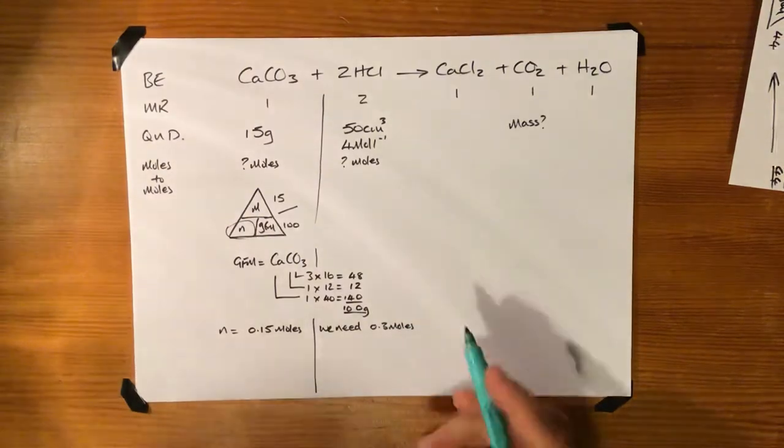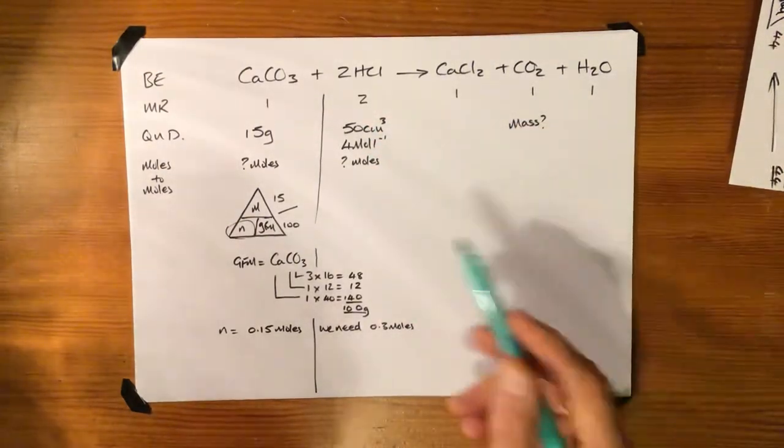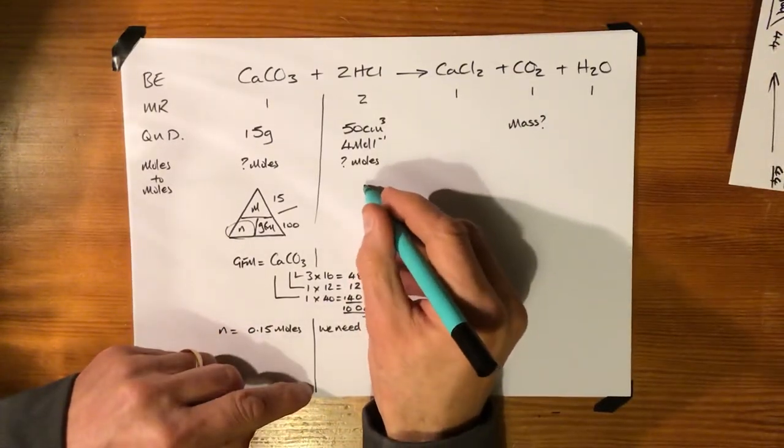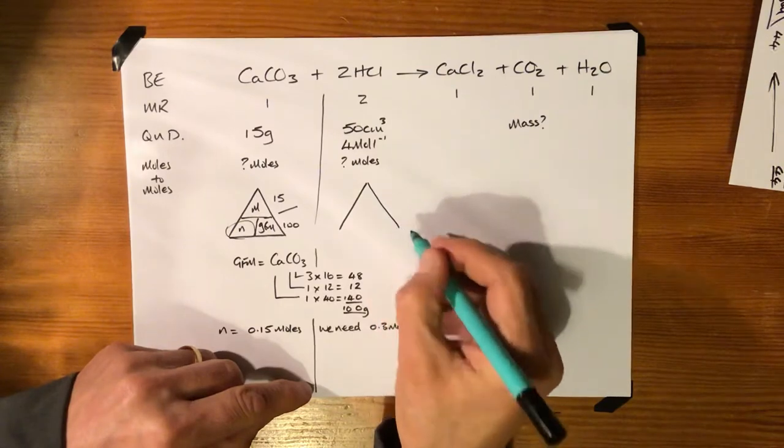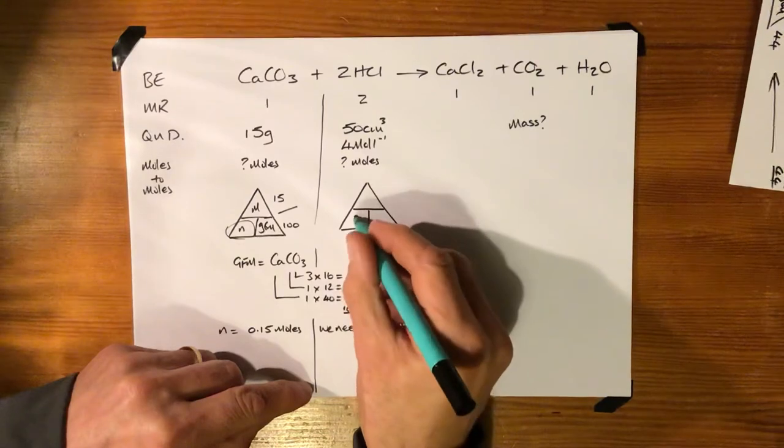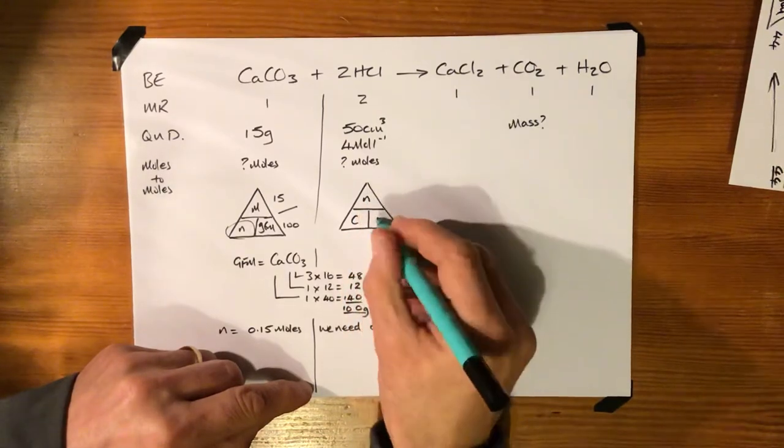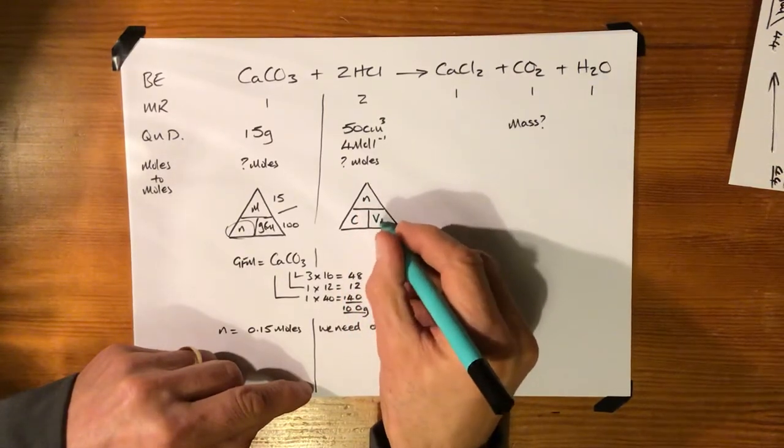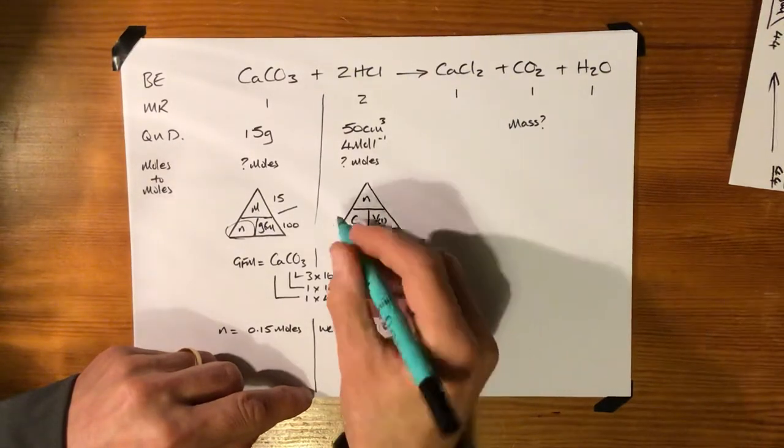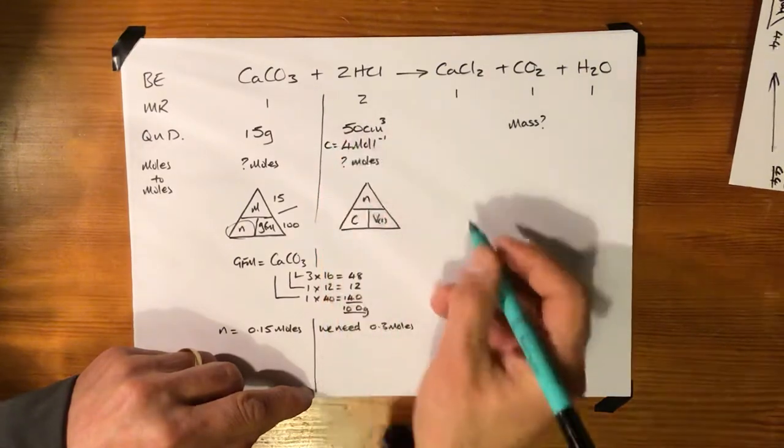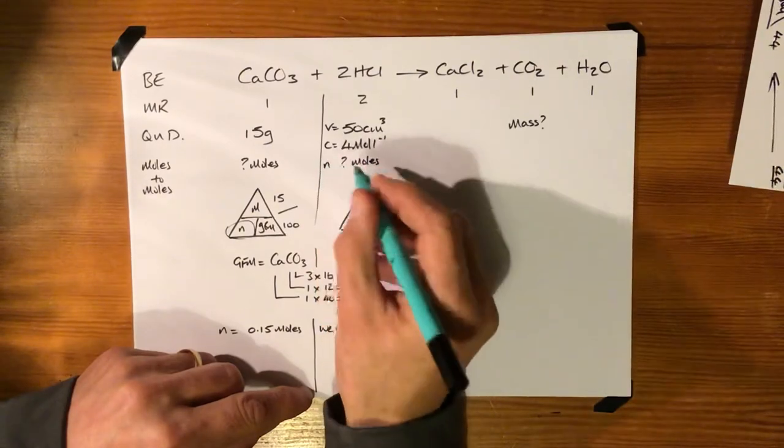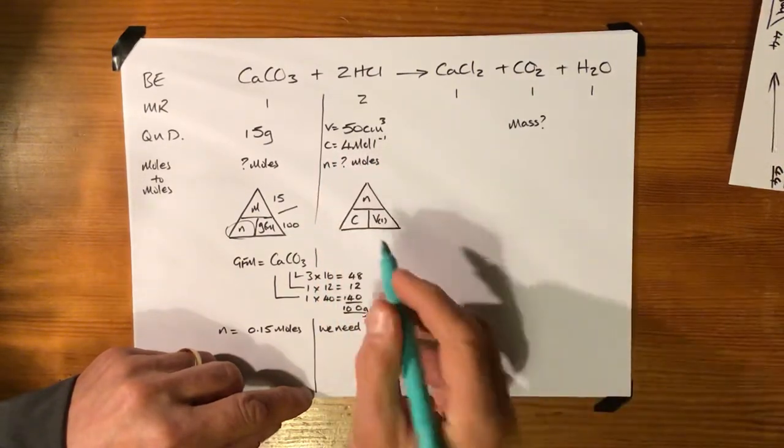Right, so let's have a look and see how many moles we've got here. And remember it's a different triangle this time. So concentration is the number of moles per liter volume in liters. So concentration, we've got a concentration, we've got a volume, and this is the number of moles we're looking for here.